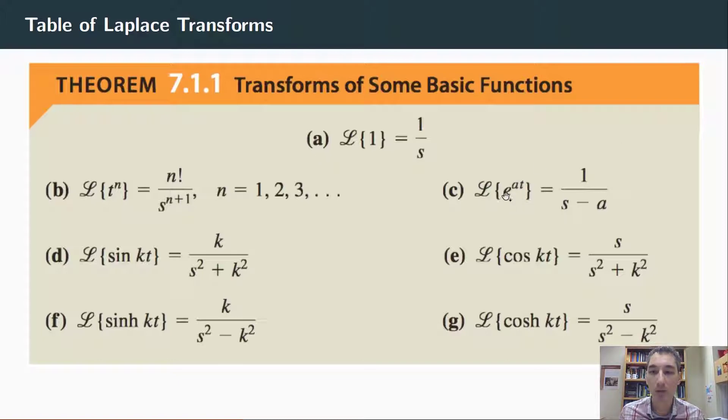So remember, something like e to the at gives us one over s minus a. Well, that has a spike at s equals a, so the Laplace transform version is telling you where the frequency is showing up in terms of e to the t.